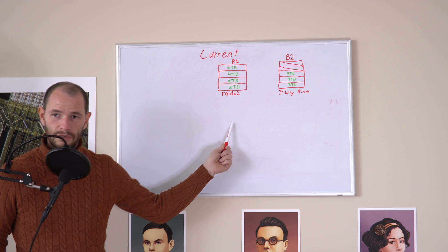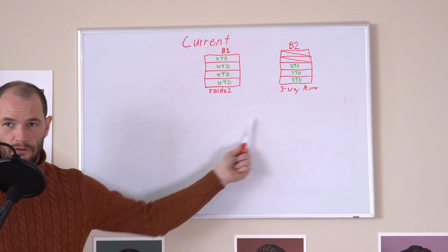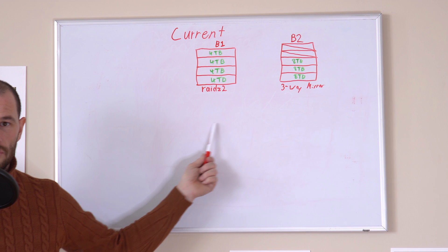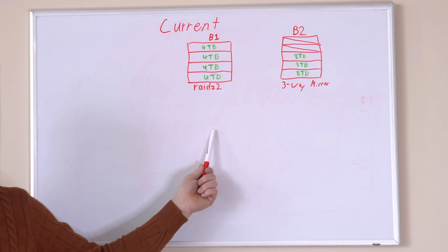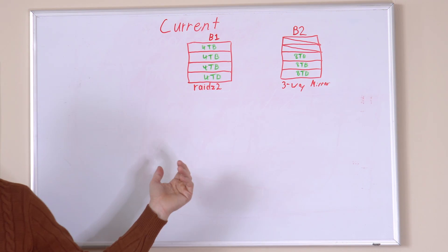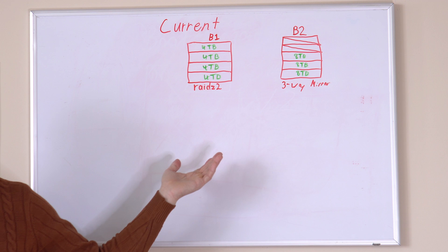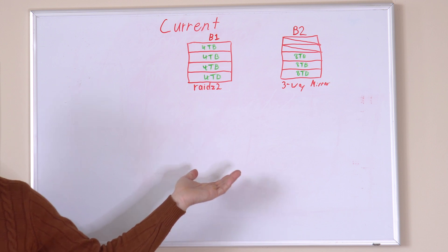Here's a diagram to illustrate the setup that I have right now. I actually have two backups of all of my data in two different storage bays, and each storage bay is using its own ZFS pool. I won't claim that this is the best setup, but this is just my setup.